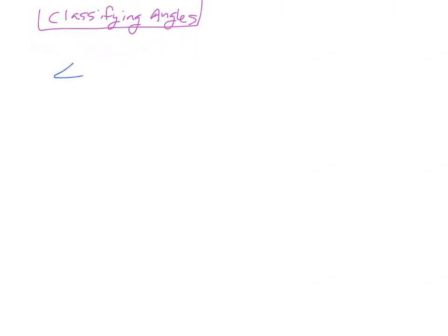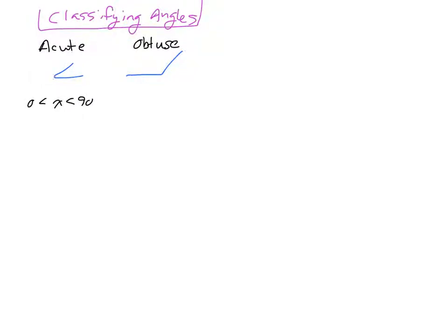We have one angle that looks like this versus one angle that looks like this. This one's acute and that one's obtuse. You can think of acute angles — acute looks like a cute little puppy. They're cute and small. Obtuse sounds like obese, and obese means you're big. For an acute angle, x must be less than 90 degrees but greater than zero. For an obtuse angle, x has to be less than 180 degrees but greater than 90.